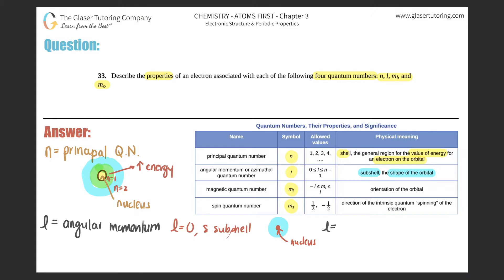If you have an l equal to one, these are classified as the p subshell. The p orbitals look different from s — they look like dumbbells, with one lobe above and one below, or to the sides. The electron has probability of being found in either lobe. Different names — s subshell versus p subshell — mean different shapes. There are also different shapes for l equals two, l equals three, and so on.